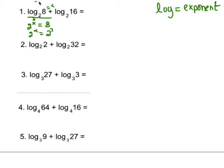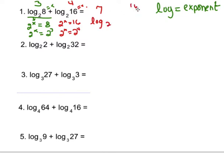If we get the same bases, x is going to equal 3, so log₂8 is 3. Log₂16 is very similar — we change that to exponential: 2 to the x is equal to 16. Getting the bases the same, 2 to the 4th, so x equals 4. So we do 3 plus 4 which is 7, which is actually the same thing as log₂(8 × 16). 8 times 16 is 128, so log₂128 equals 7.